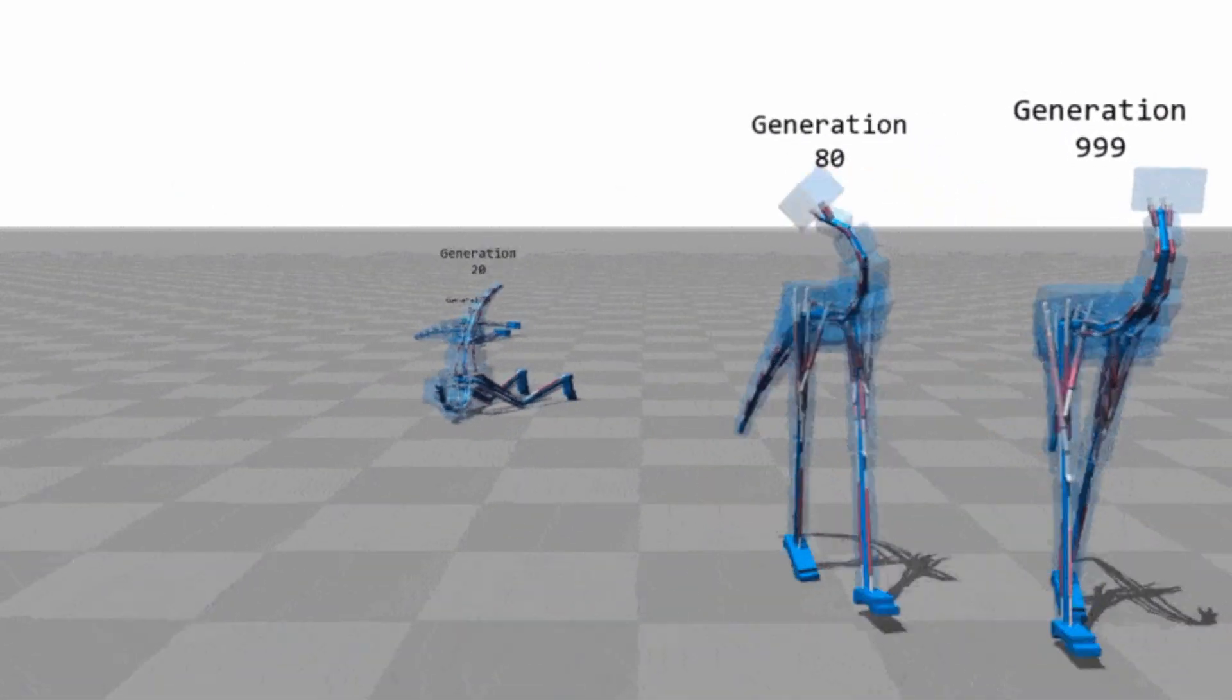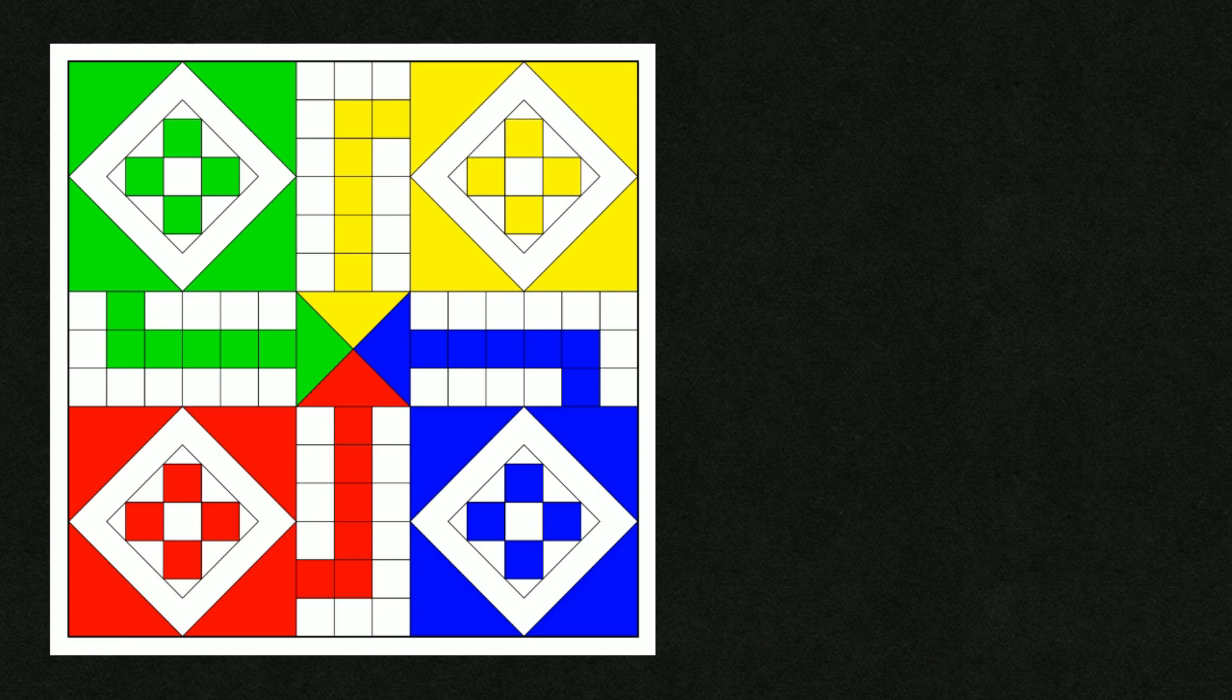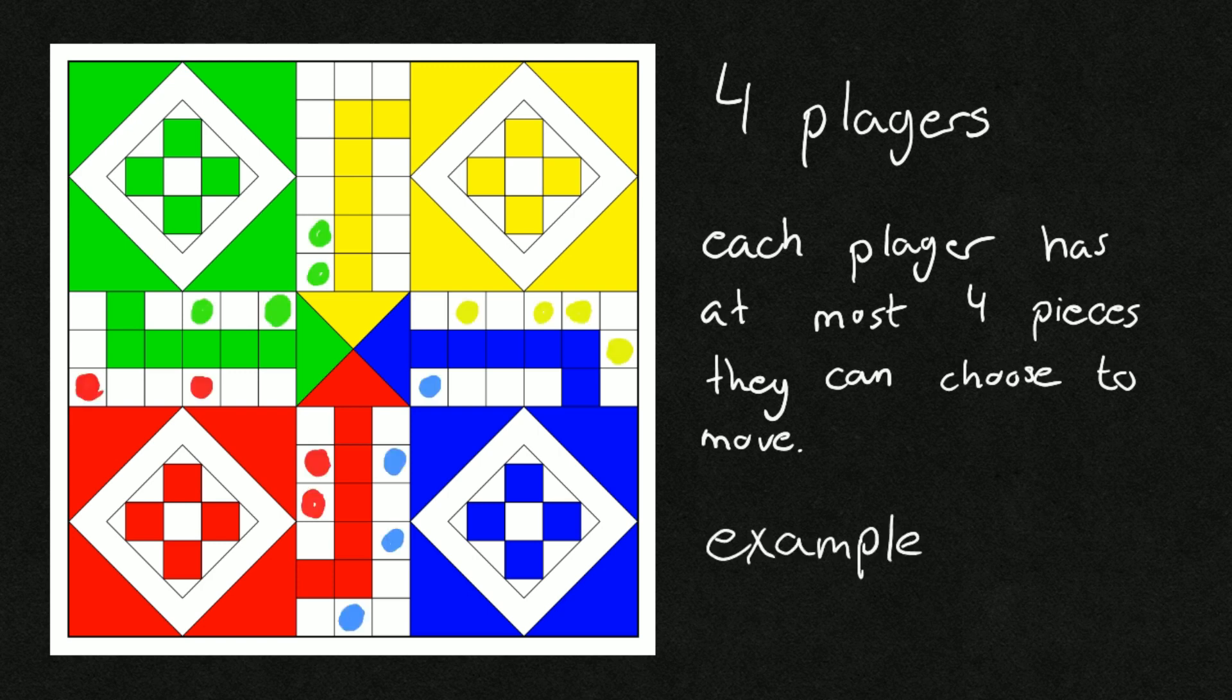First of all we need to figure out how the neural network is going to look, and to figure this out we need to take a look at the game. We have four players in the game and each player in a best case scenario can choose one of four actions. They can choose either to move piece one, two, three, or four if all four pieces are on the board.